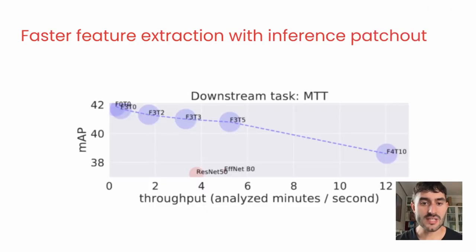In our last experiment, we assessed the use of patchout at inference time. We find that it is possible to reach scenarios where the throughput is higher than the fully convolutional baseline while keeping higher performance.